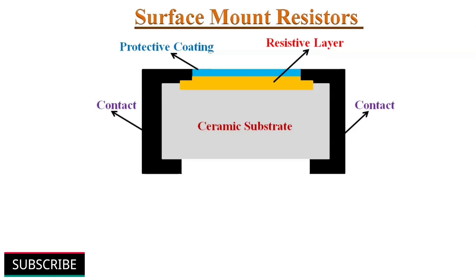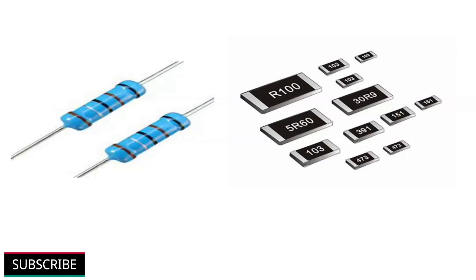On both sides, there are metallic contacts attached so that surface mount resistors can be soldered on the PCB. The advantages of surface mount resistors are compact in size, high stability, they have good tolerance, more accurate and they are effective in reducing heat dissipation. That's all about different types of resistors.